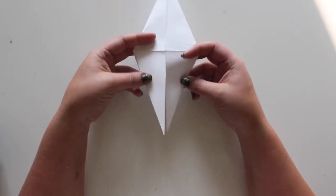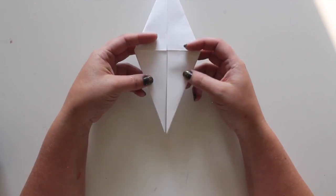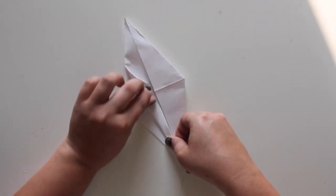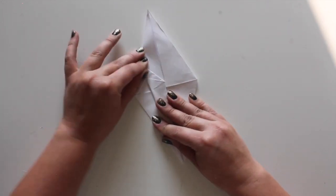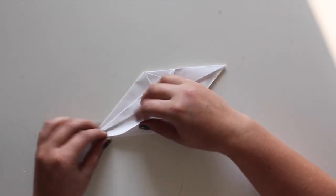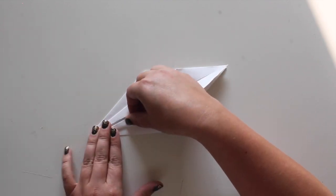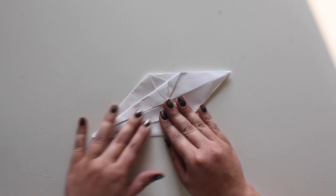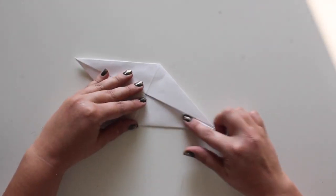Now the paper should have two legs at the bottom. Fold the first layer inward to the center line and repeat on the other side. Flip over and repeat for the back.